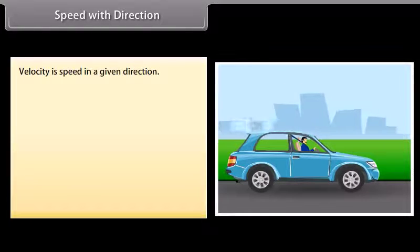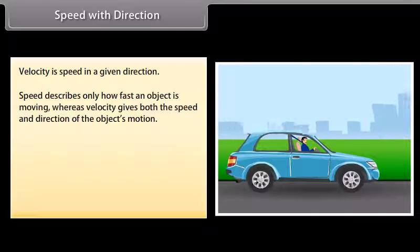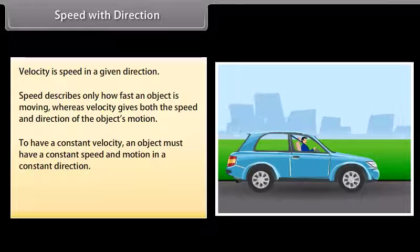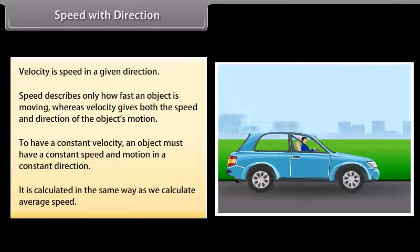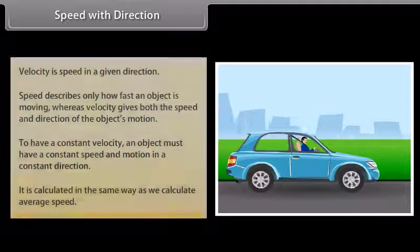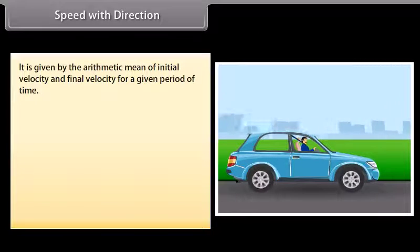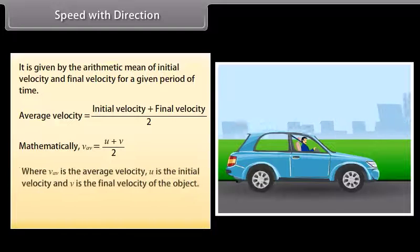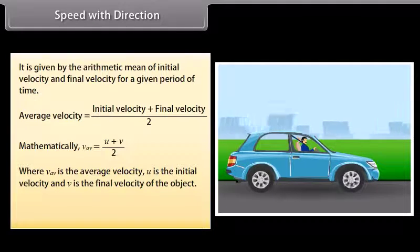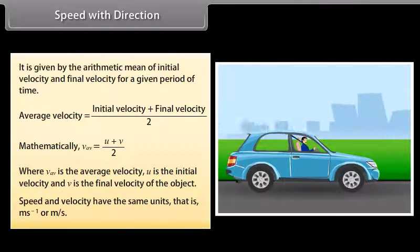Speed with direction: velocity is speed in a given direction. Speed describes only how fast an object is moving, whereas velocity gives both the speed and direction of the object's motion. To have a constant velocity, an object must have a constant speed and motion in a constant direction. Average velocity is calculated as the arithmetic mean of initial velocity and final velocity: average velocity = (U + V) / 2, where U is the initial velocity and V is the final velocity. Speed and velocity have the same units — meters per second.